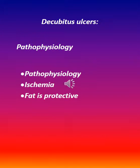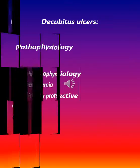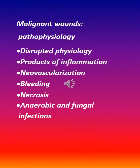Decubitus ulcer pathophysiology involves ischemia — fat is protective. Malignant wounds pathophysiology involves disrupted physiology, products of inflammation, neo-vascularization, bleeding, and necrosis, as well as anaerobic and fungal infections.